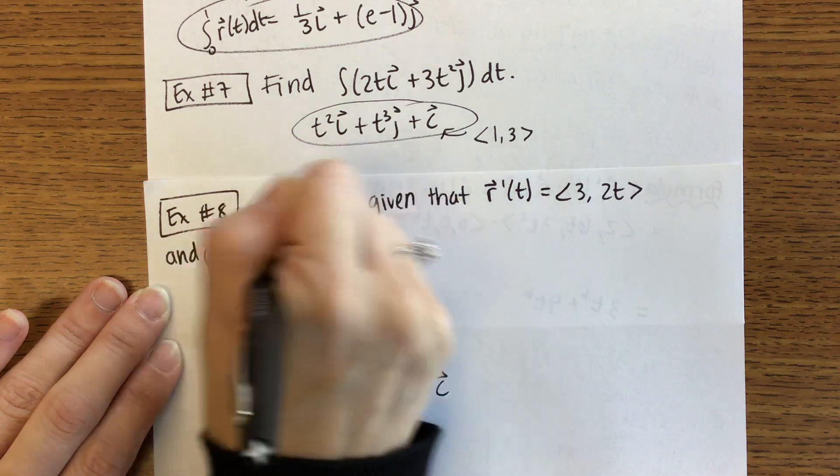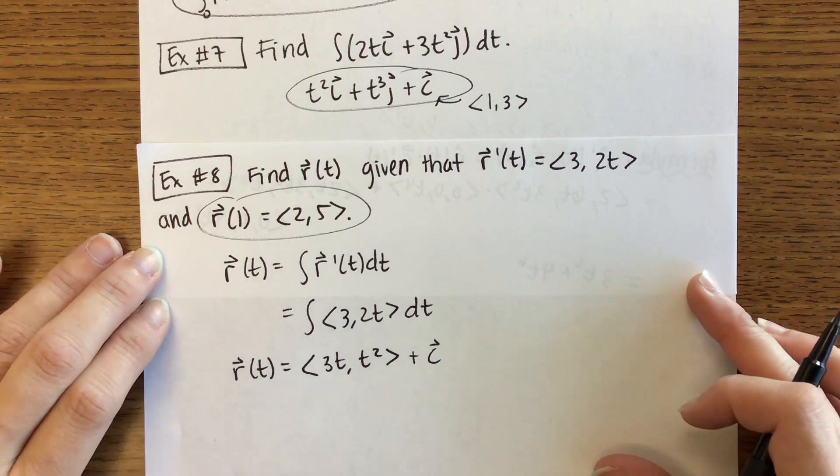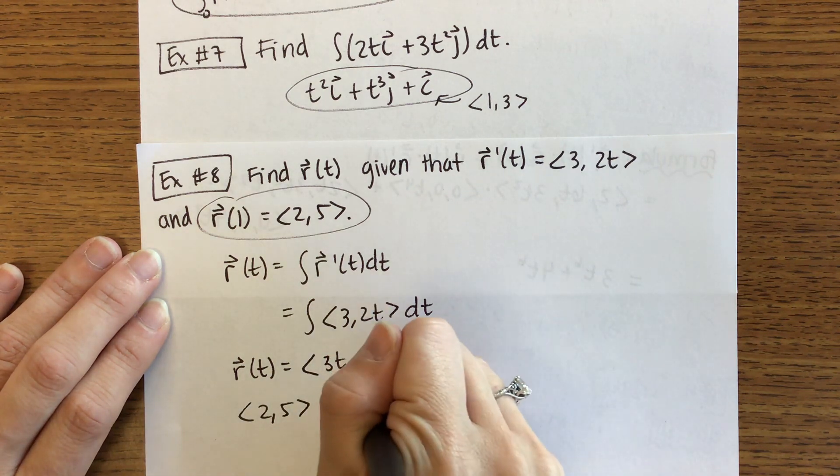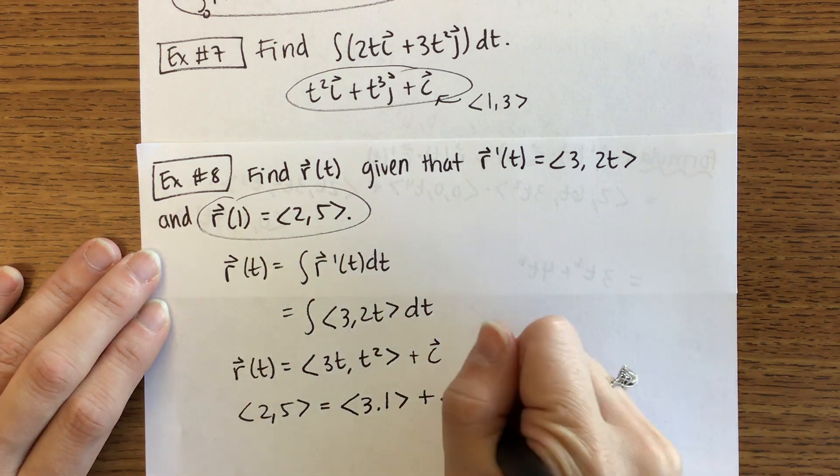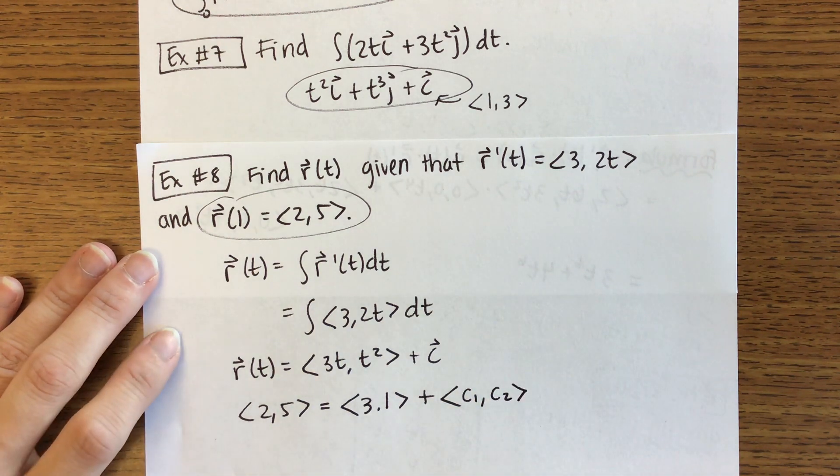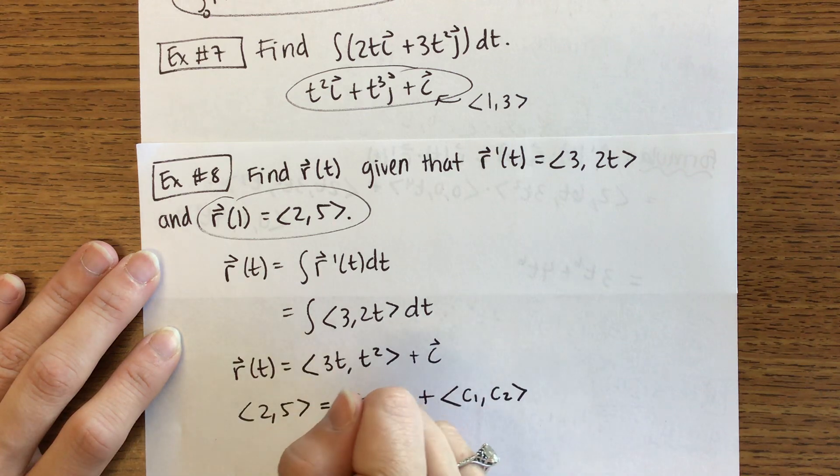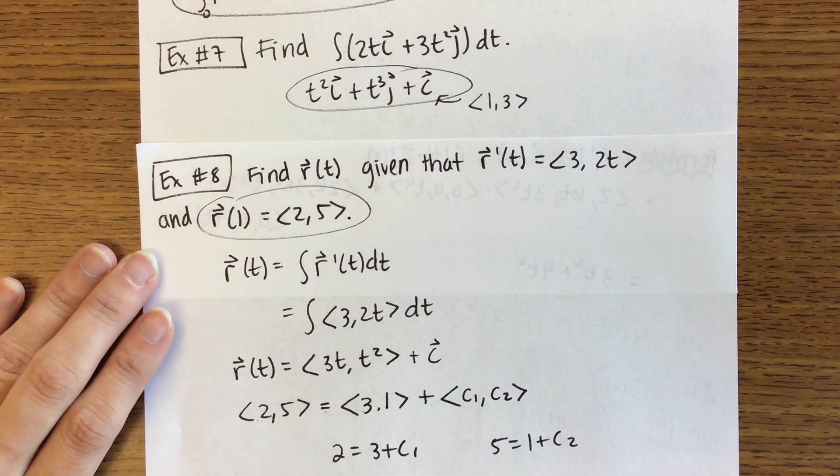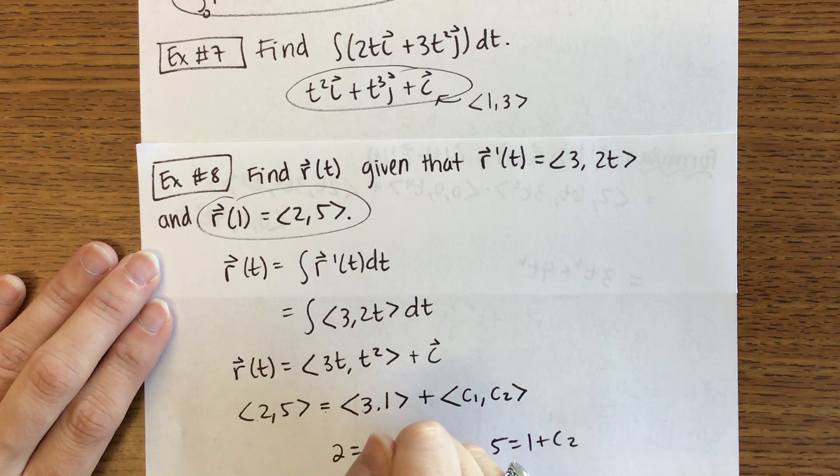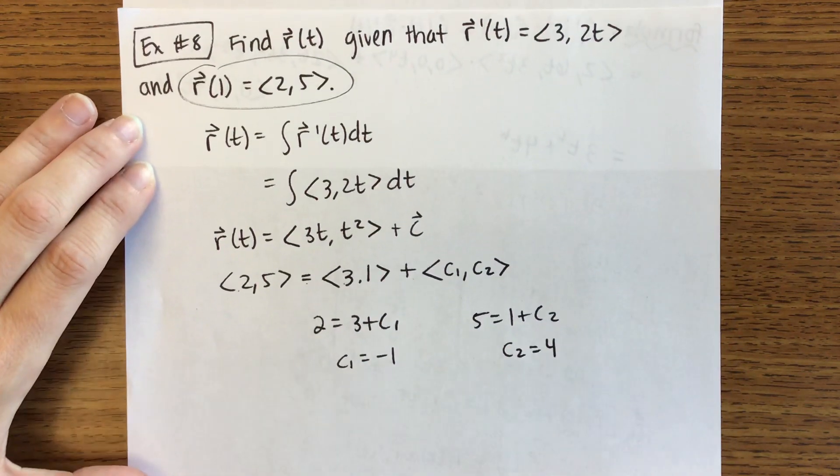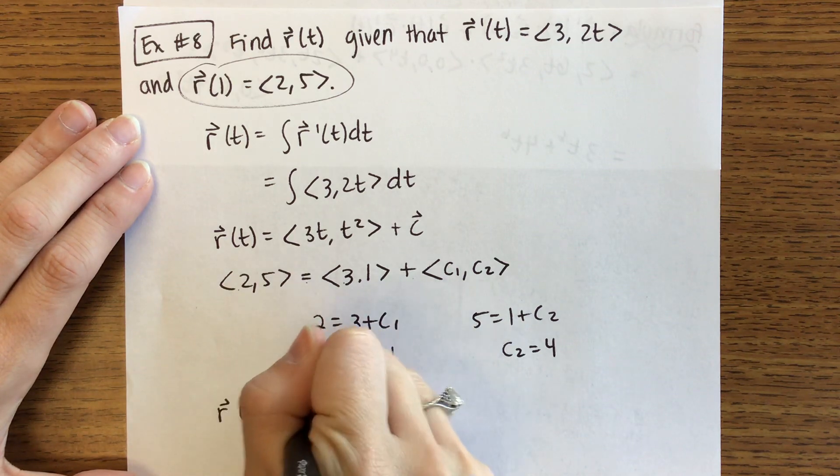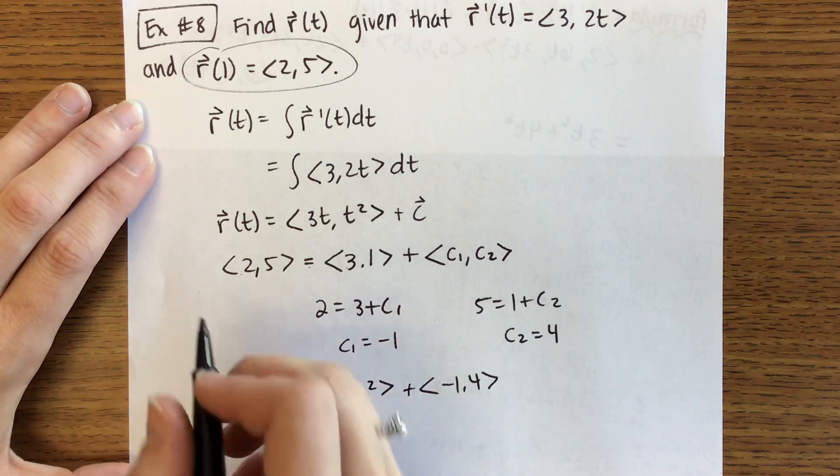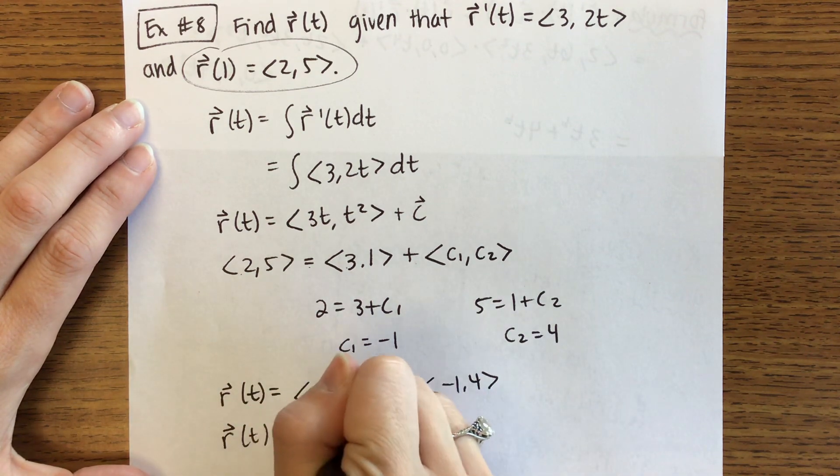We also know what r(1) is. That's going to help us find our c vector. So r(1), that <2, 5>, is going to be equal to, when I plug in 1, so this will be <3, 1> plus c. I'm going to break it into its components. So I'm going to call that c₁ and c₂. In this case, we see that 2 equals 3 + c₁, and 5 equals 1 + c₂. I'm just equating the first components and the second components. I get c₁ then to be -1 and c₂ to be 4. So our r(t) then is going to be that <3t, t²> added with our vector c. So <-1, 4>. Generally, you'll see that written together. So you might see <3t - 1, t² + 4>.